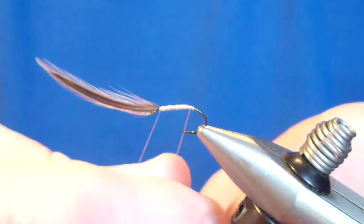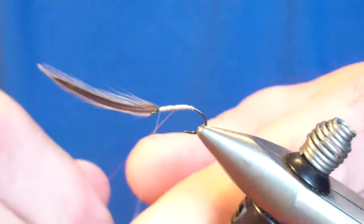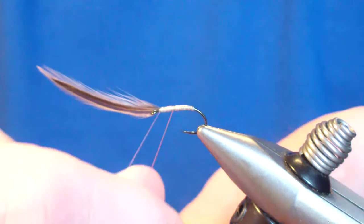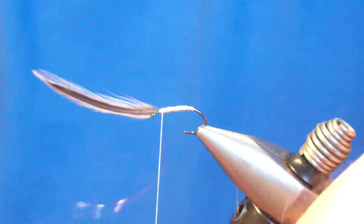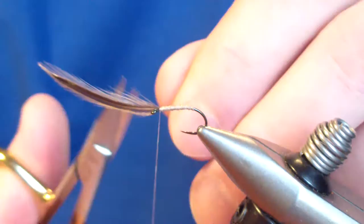And we're going to counter wrap our wire, evenly spaced, and bring that up to the hackle as well. And the last wrap. Remember we left a little bit of space there. And trim off our wire.